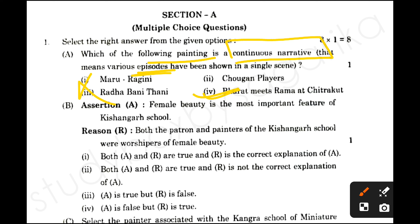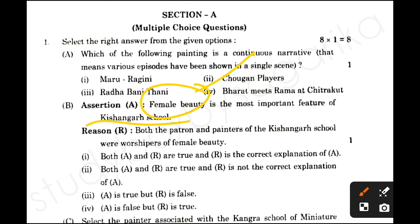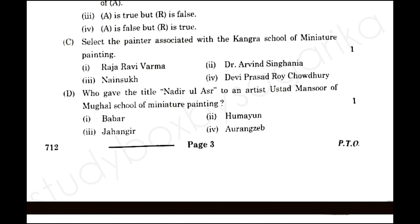Next question is assertion and reason: 'Female beauty is the most important feature of Kishangarh school.' Both the patron and the painters of the Kishangarh school were worshippers of female beauty. If you have read about Radha Bani Thani, the king was shocked and fascinated — he treated her as a queen. So both painters and patron were worshippers. The answer is number one: both A and R are true and R is the correct explanation of A.